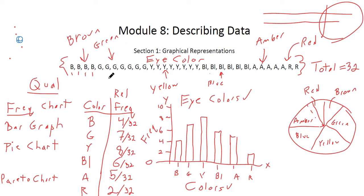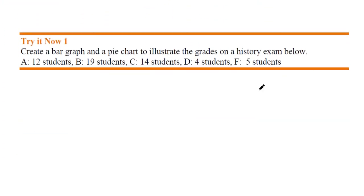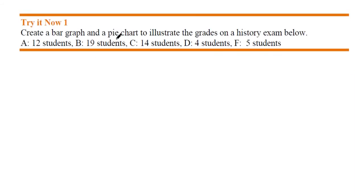Let's go through a couple examples from the OER textbook. Create a bar graph and pie chart to illustrate the grades on a history exam: A is 12 students, B is 19, C is 14, D is 4, and F is 5. I always recommend pausing the video to try the problem yourself before seeing the solution. Looking at my values 12, 19, 14, 4, and 5, I need to make a bar graph and a pie chart.